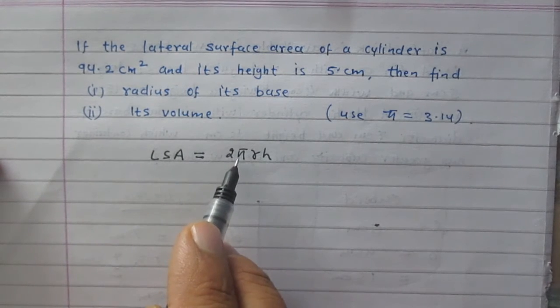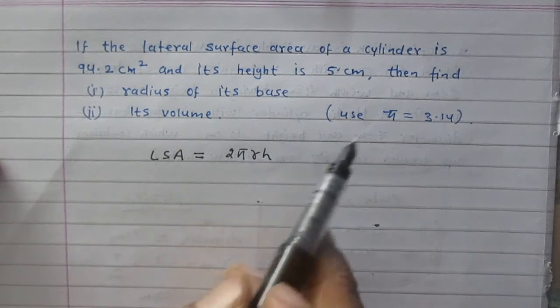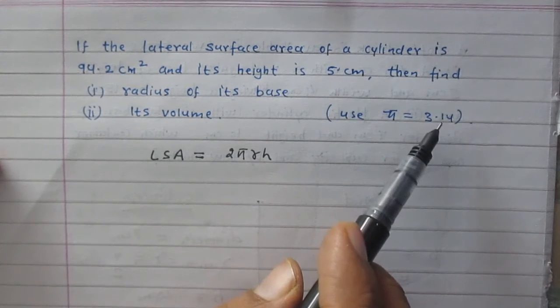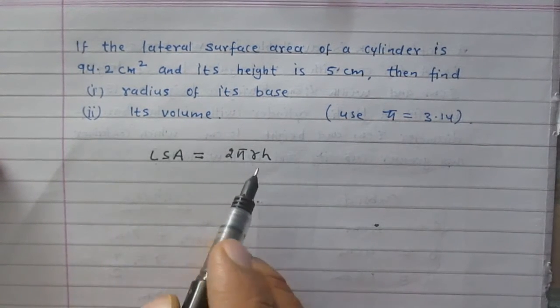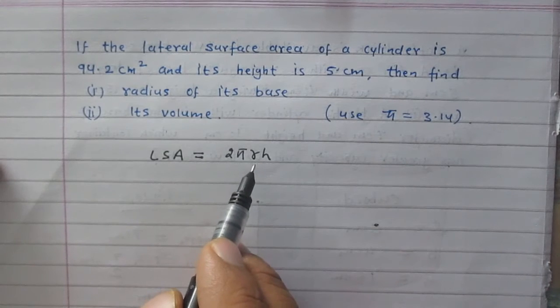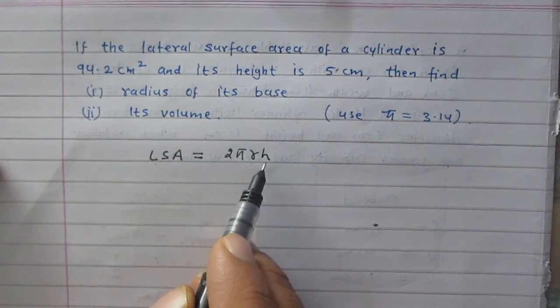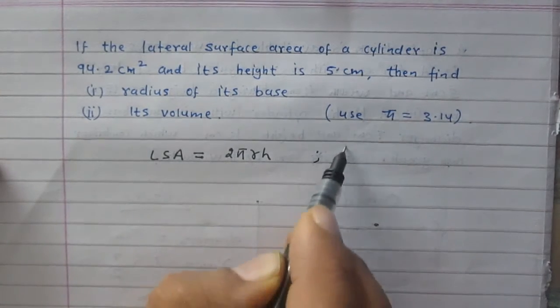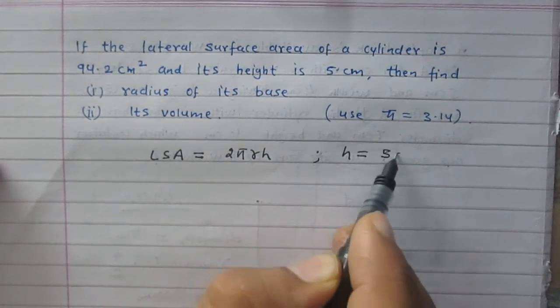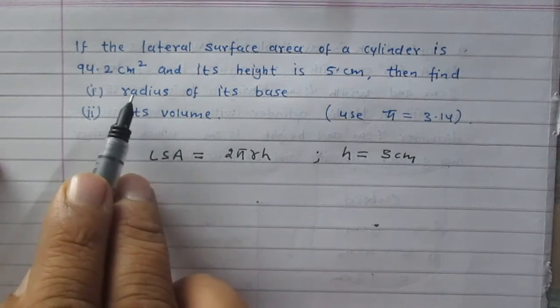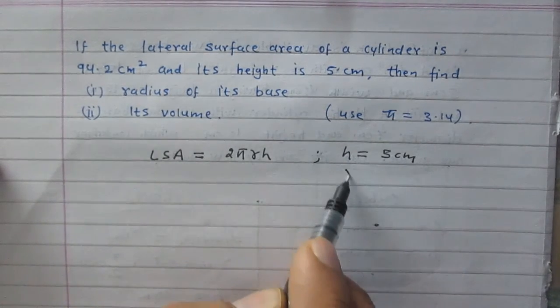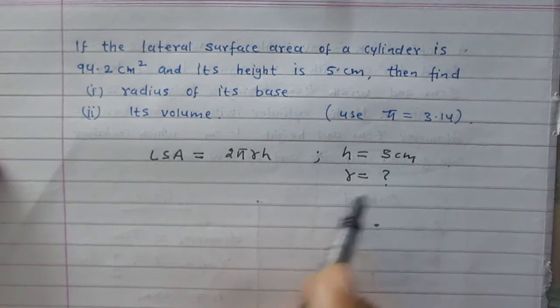Pi, the value of pi is 3.14. Here we are given the value of h which is 5 cm. Height of the cylinder is 5 cm and we are to find radius of its base, so r is unknown.